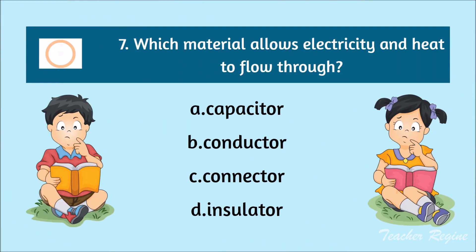Number 7. Which material allows electricity and heat to flow through? A. Capacitor, B. Conductor, C. Connector, or D. Insulator. The correct answer is letter B. Conductor.